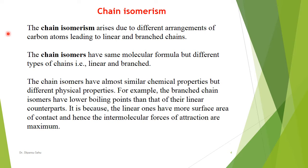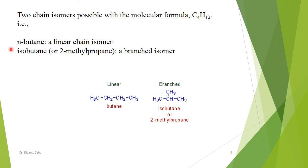Always remember that the branched chain has a lower boiling point than its linear counterpart, because the linear one has more surface area in contact. Branched means squeezed, so the surface area is less, the intermolecular force of attraction is less, and so BP is lower. For example, this is the linear structure of butane and this is the branched structure of butane known as isobutane or 2-methylpropane.